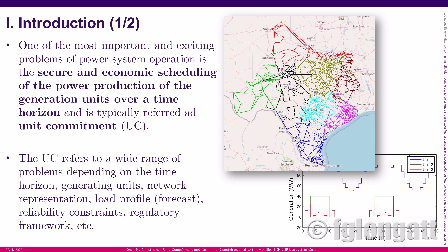Depending on the generating units, network representation, load profile, reliability constraints, regulatory framework, and so on, there are probably thousands of scientific papers published in this area. The scientific literature covers many techniques applied to solving unit commitment, which have been improved over time from early ones based on priority lists and dynamic programming to the current most widely used approach based on mixed-integer programming.